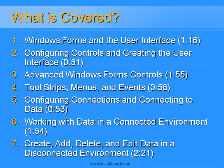Here's a breakdown of what we cover in the course, based pretty much on the MS Press book outline. Chapter 1 is on Windows Forms and the user interface — a gentle introduction to creating controls and Windows Forms projects, running approximately 1 hour 16 minutes. Chapter 2 covers configuring controls and creating the user interface — more controls — at around 51 minutes. Chapter 3 is advanced Windows Forms controls, covering more advanced features such as tree views and list views, running just under 2 hours. Chapter 4 is on tool strips, menus and events — how to create toolbars and menus and handle events such as mouse down events — just under 1 hour.